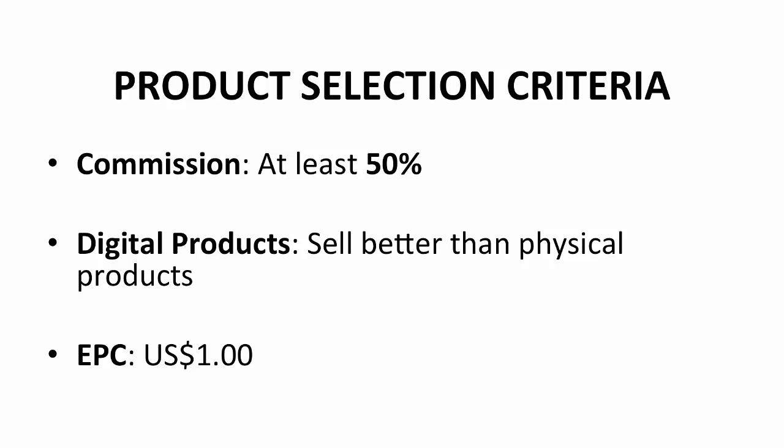A criteria that a product must meet before you can sell it. Firstly, you need to choose the product with the most rewarding commission. Do not go for anything less than 50% — they're not worth your time. Digital products sell better than physical products. Physical products do sell, but far less than digital products. Also, physical products seldom have 50% commission. Your earning will be less for the same amount of work a digital product affiliate would do. Also, make sure the Earnings Per Click, or EPC, is at $1 US dollar. I will explain to you more about EPC later on in this module.